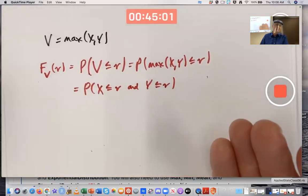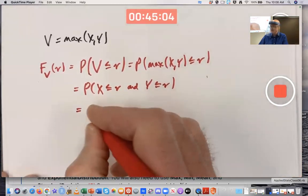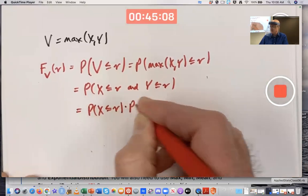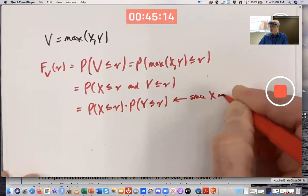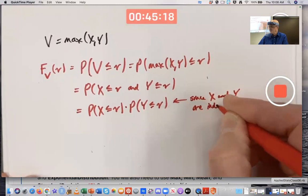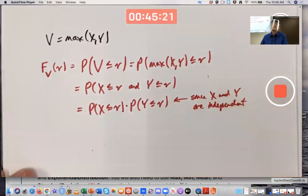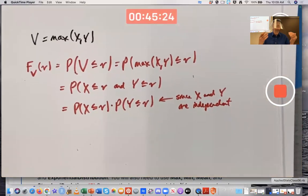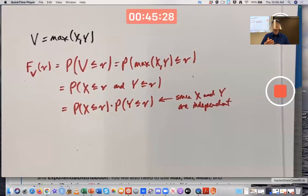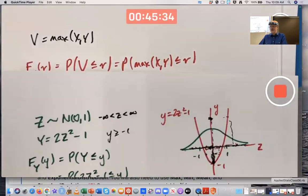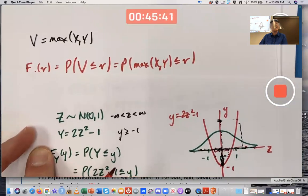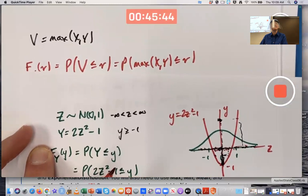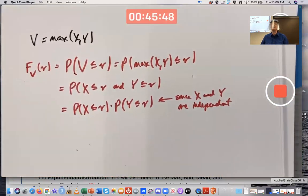And here's where you use independence. Assuming X and Y are independent, we can use the multiplication rule for independent events. We're making that as an assumption. When you're doing simulations, if you simulate them separately with random variate, that will automatically be true. Random variate is simulating them independently. Here, X and Y are independent, I'm assuming.